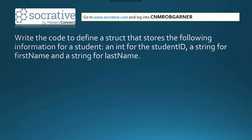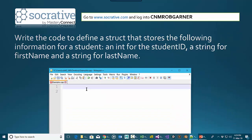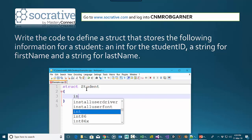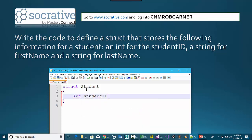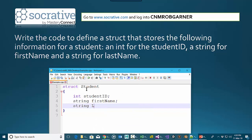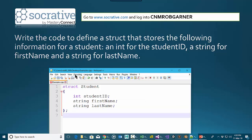Let's try to write the code to define a struct that stores the following information for a student: an int for the ID, a string for the first name, and a string for the last name. We're going to use the keyword struct, and then call this 'student'. In curly braces we put the elements of this struct: an int for studentID, a string for firstName, and a string for lastName. And don't forget the struct requires a semicolon at the end.